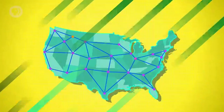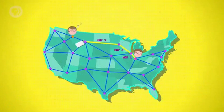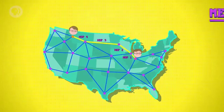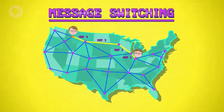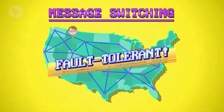Instead of a dedicated route from A to B, messages are passed through several stops. So if John writes a letter to Hank, it might go from Indianapolis to Chicago, then hop to Minneapolis, then Billings, and finally make it to Missoula. Each stop knows where to send it next, because they keep a table of where to pass messages given a destination address. What's neat about message switching is that it can use different routes, making communication more reliable and fault tolerant.